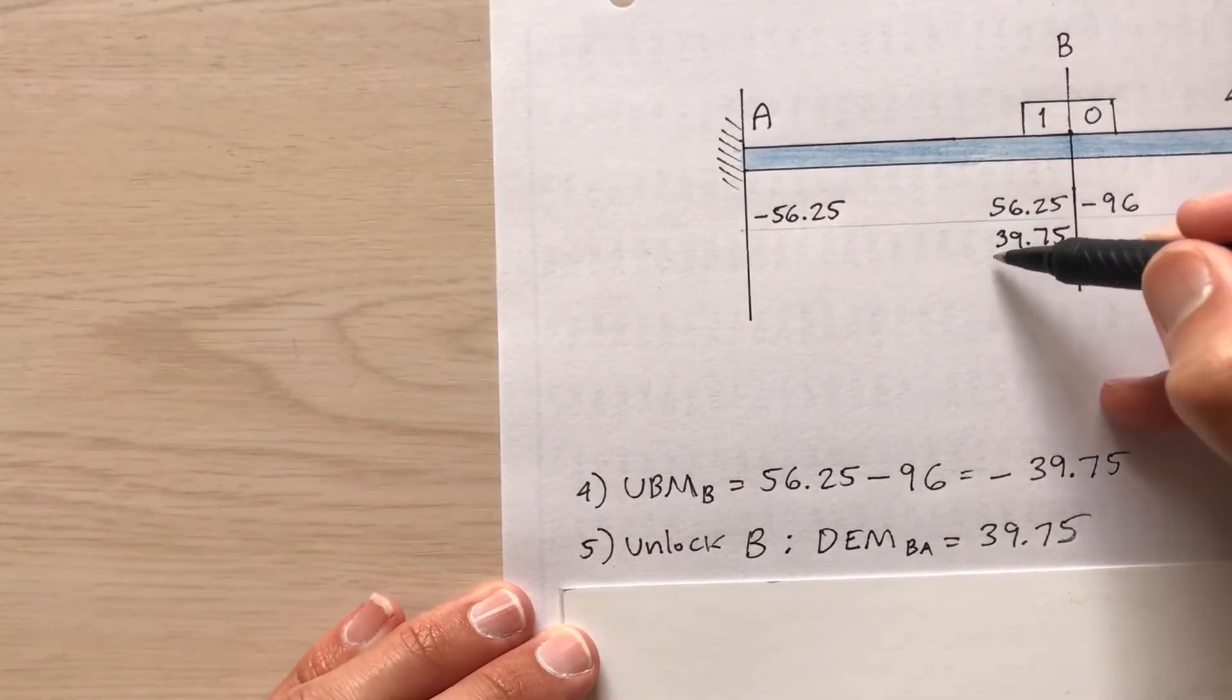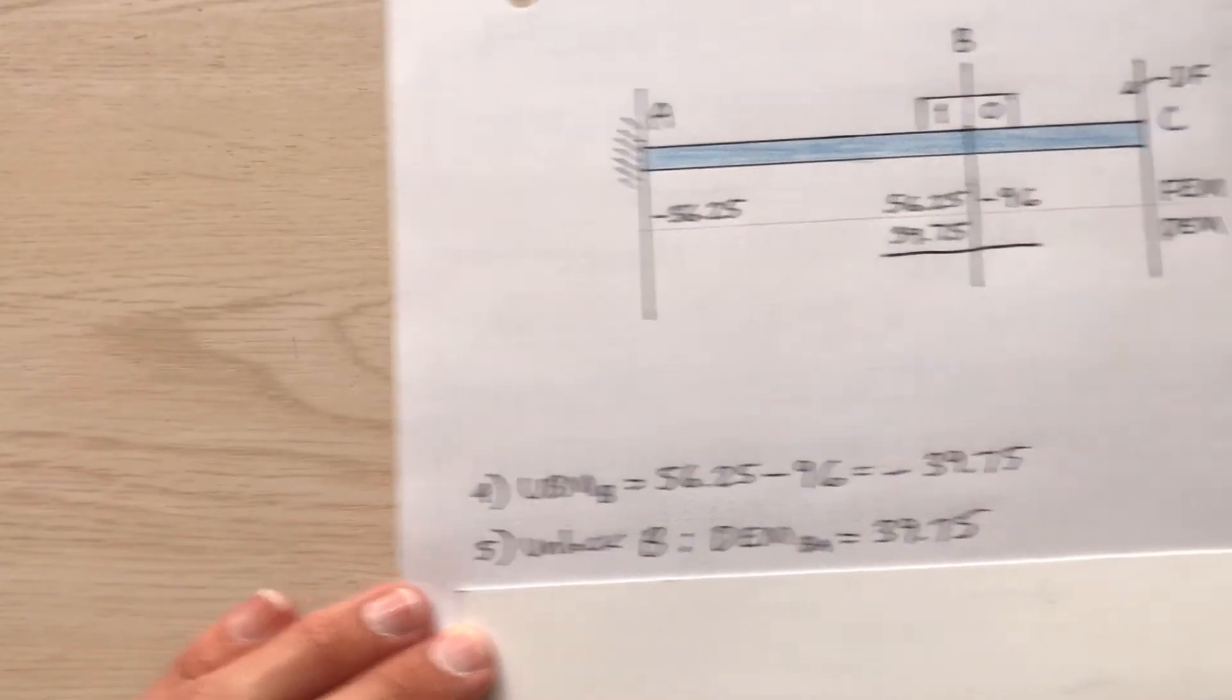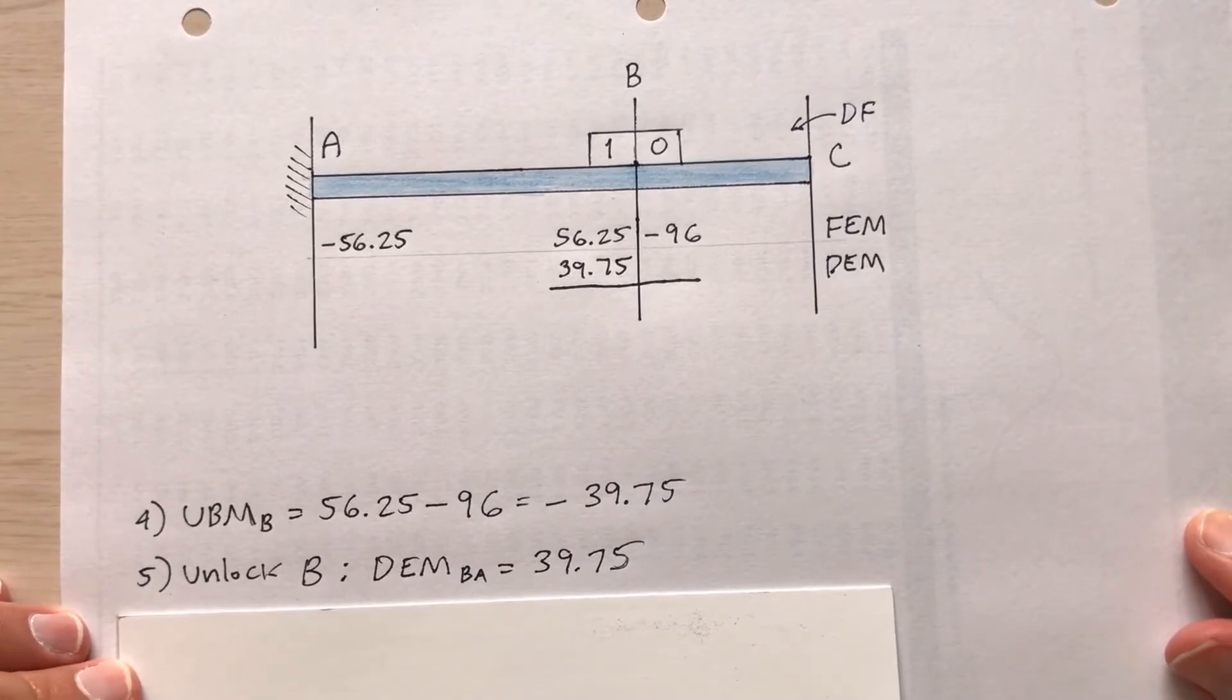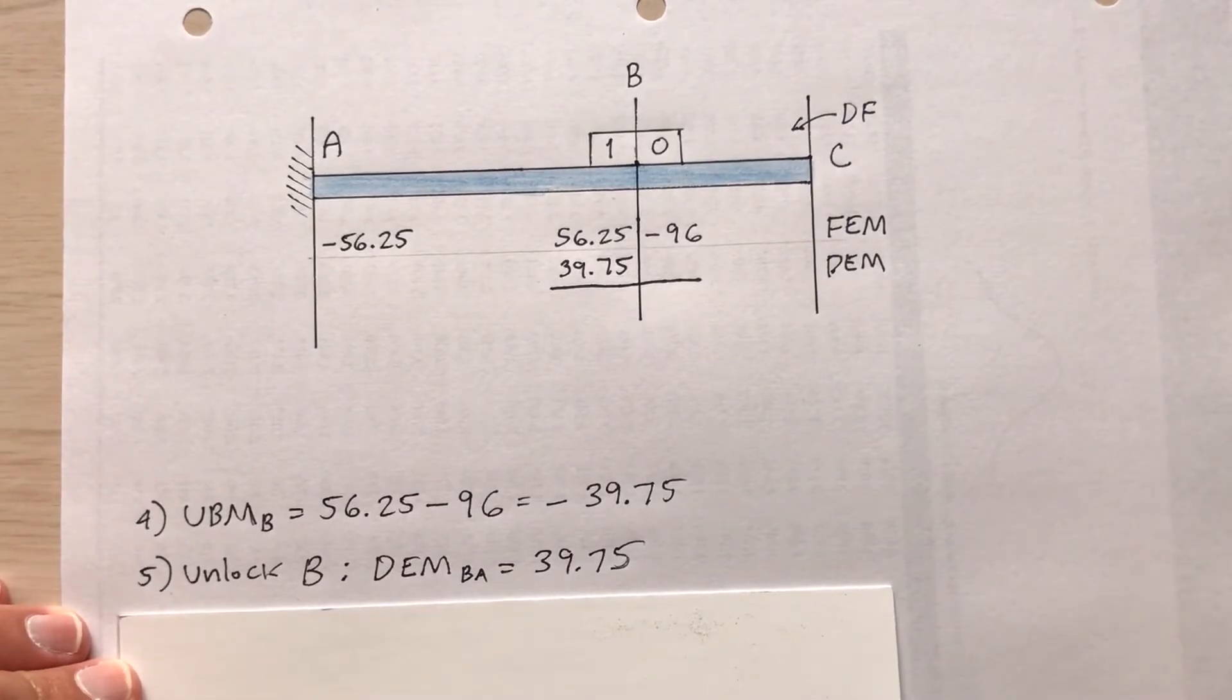Now the joint is balanced. I don't have to worry about distribution factor on BC because that's zero. It all goes to side BA, that is the left side of the joint.